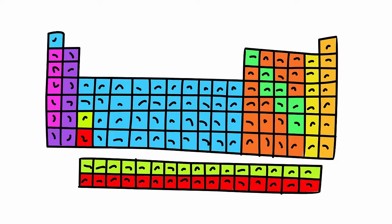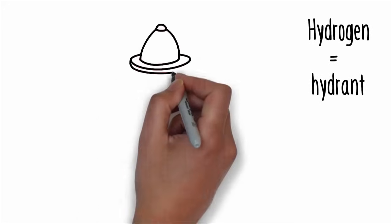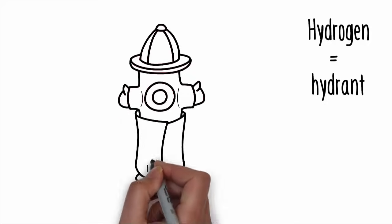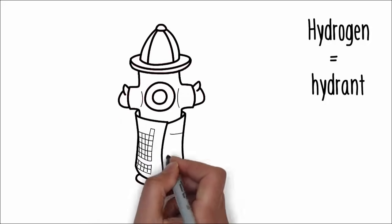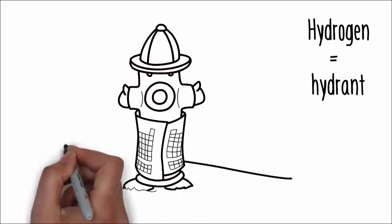Now we'll take that colorful poster and attach it to the first element. Picture that poster of the periodic table and imagine it's wrapped around a water hydrant. Why a water hydrant? The first element in the periodic table is hydrogen. Hydrogen sounds similar to hydrant and that's how you'll be reminded of it. Picture a water hydrant you see on the sidewalk. It's short, stubby, red and looks strong.